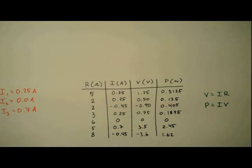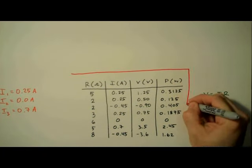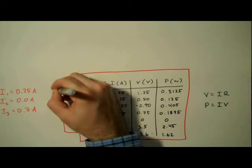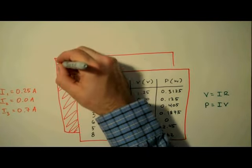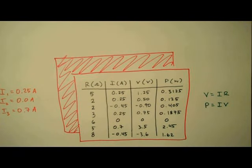Well, there you have it. Using Kirchhoff's rules in conjunction with some linear algebra techniques to determine the current through, voltage across, and power dissipated by a bunch of resistors. I'm Jesse Mason. I hope you found this video helpful. And until next time, happy learning.